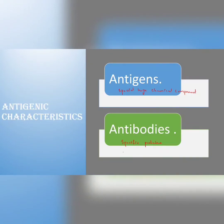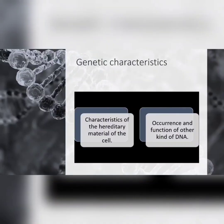Antibodies are highly specific for the antigen that induced their formation. Because different kinds of microorganisms have different types of antigens, antibodies are widely used as a tool for the rapid identification of particular kinds of microorganisms. Antibodies are a kind of protein, also associated with white blood cells.